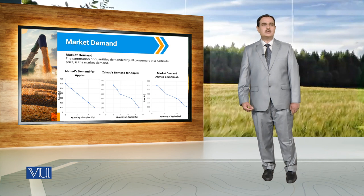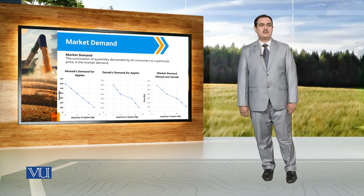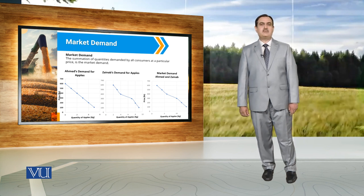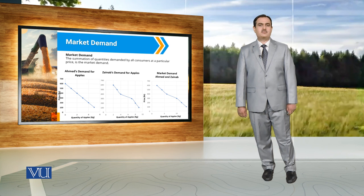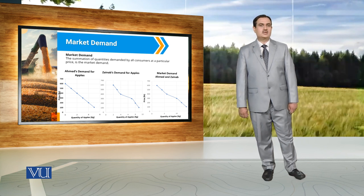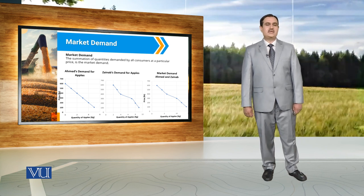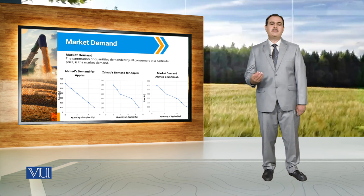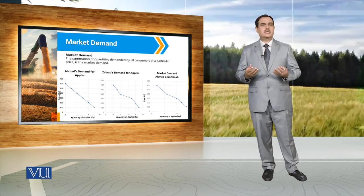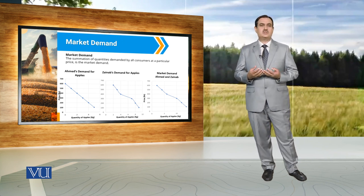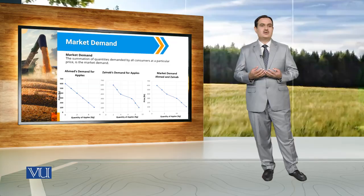When we make a discussion about market demand, it is the demand by all the individuals in a particular market. To keep things simple, we start by making an assumption that in that market there are only two individuals — one individual is Ahmad and the other one is Zainab.